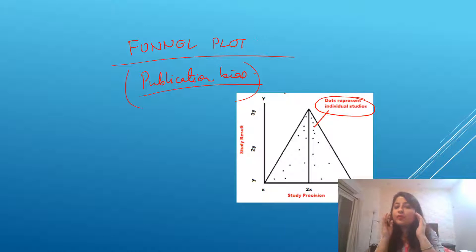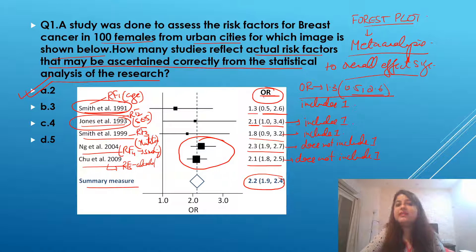So whether the studies that you have included in your systematic review or meta-analysis are of good quality or not, whether they do not have any bias is represented by this funnel plot. So this was a very short video where I have just tried to explain you how to interpret a forest plot and what is the funnel plot. If you have any questions, please put in the comment section below.